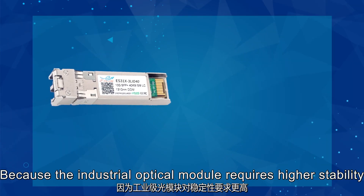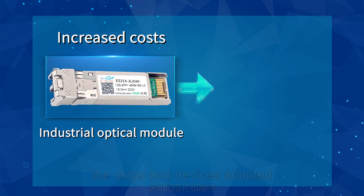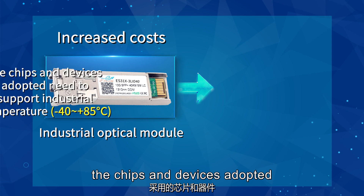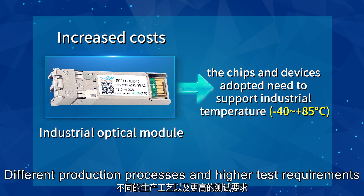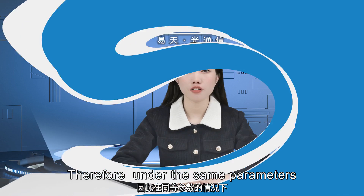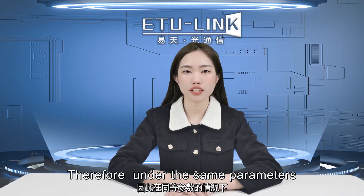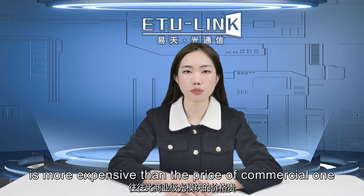Because the industrial optical module requires higher stability, the chips and devices used need to support industrial temperatures from minus 40 to 85 degrees, with different production processes and higher testing requirements, so the cost will increase. Therefore, under the same parameters, the price of an industrial optical module is more expensive than a commercial one.